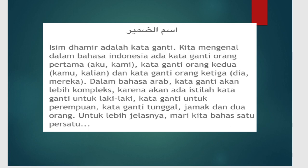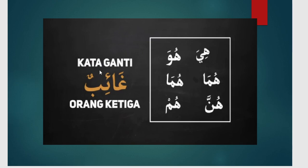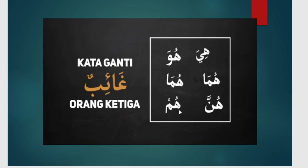Bagaimana bentuk damir itu? Damir atau kata ganti ada tiga: yang pertama disebut dengan gaib, lalu mukhatab, kemudian mutakalim. Kata ganti gaib atau orang ketiga adalah hua, huma, hum — ini untuk kata ganti orang ketiga laki-laki. Kemudian ada hiya, huma, dan hunna — ini untuk kata ganti perempuan atau mu'annas.